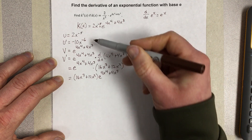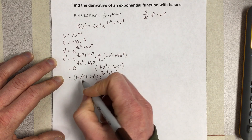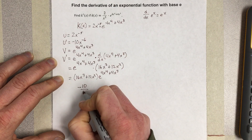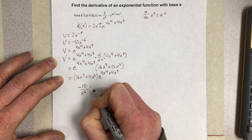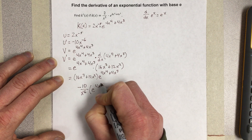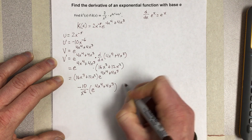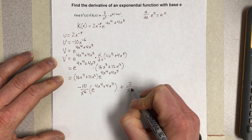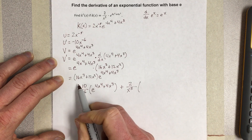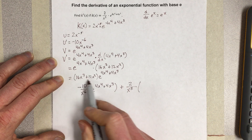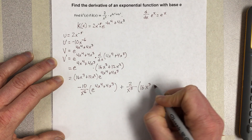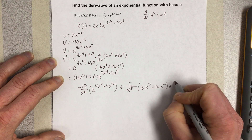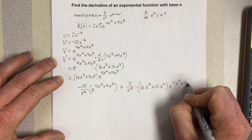Now using the product rule, I would have negative 10 over x to the 6th times e to the 4x to the 4th plus 4x cubed, plus 2 over x to the 5th times 16x cubed plus 12x squared, times e to the 4x to the 4th plus 4x cubed.